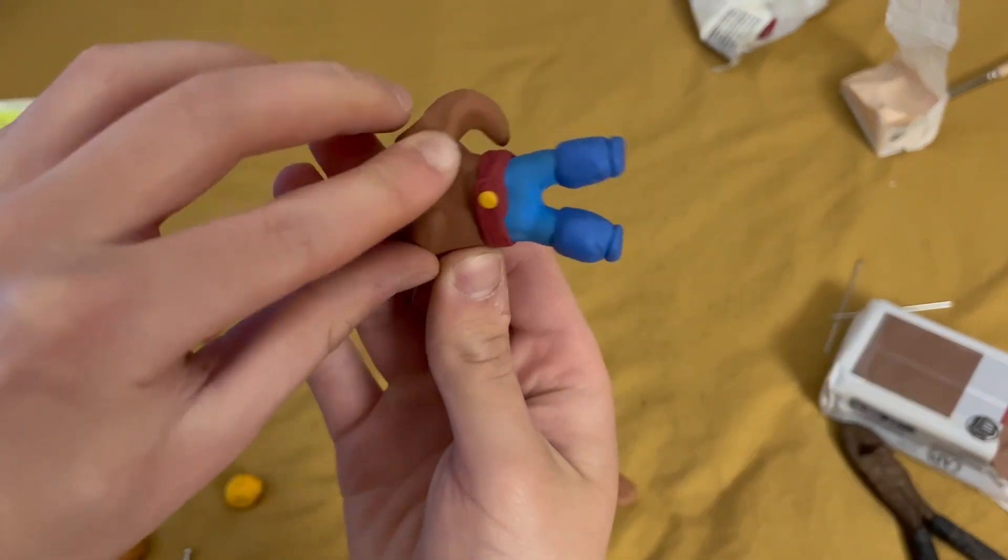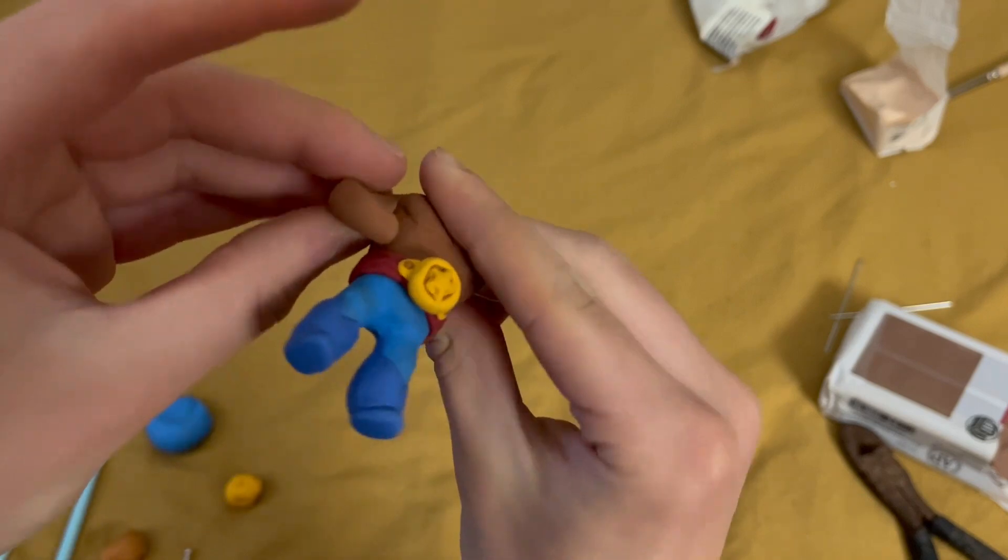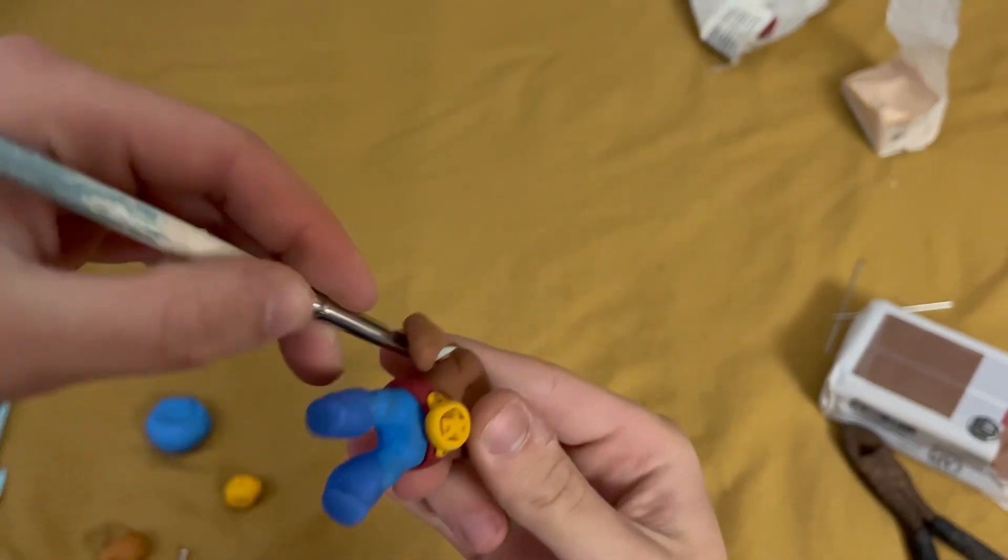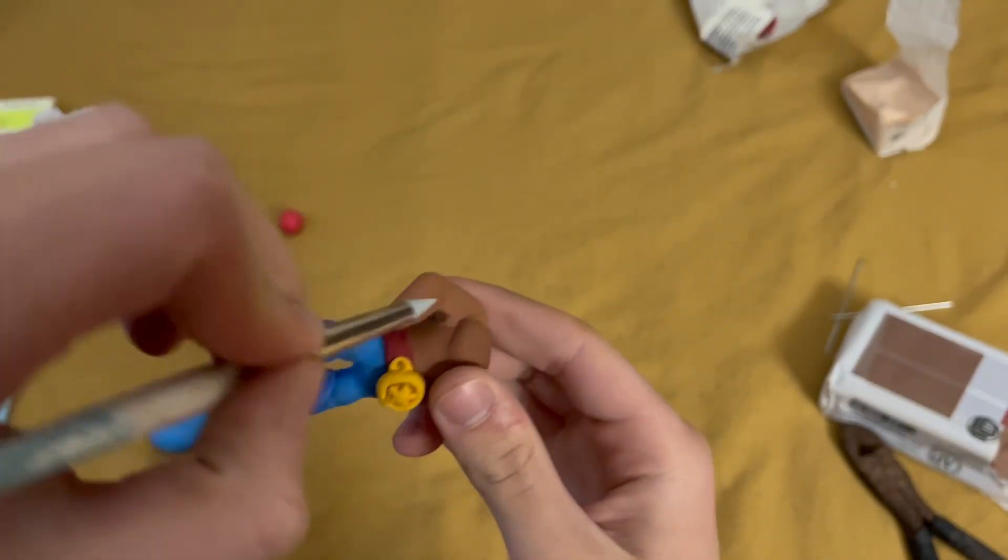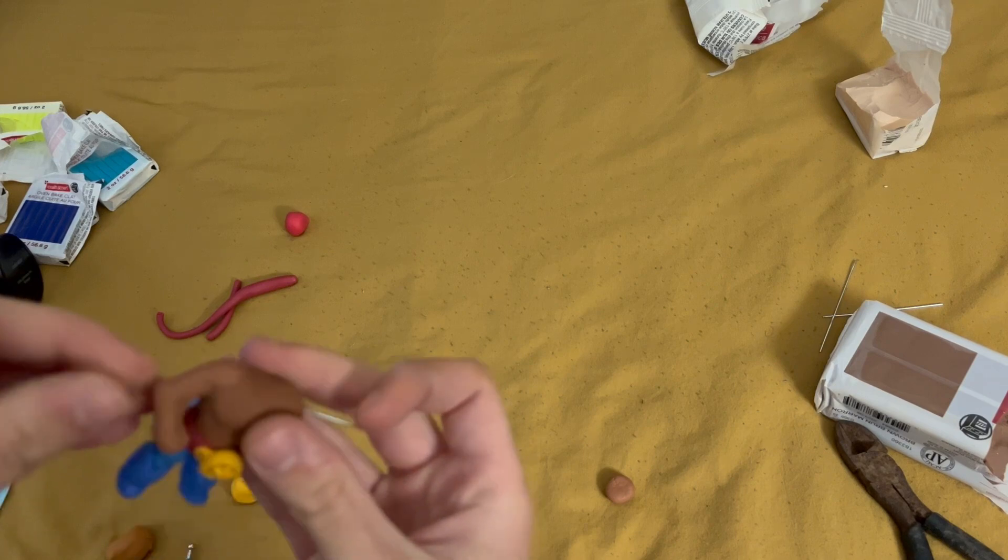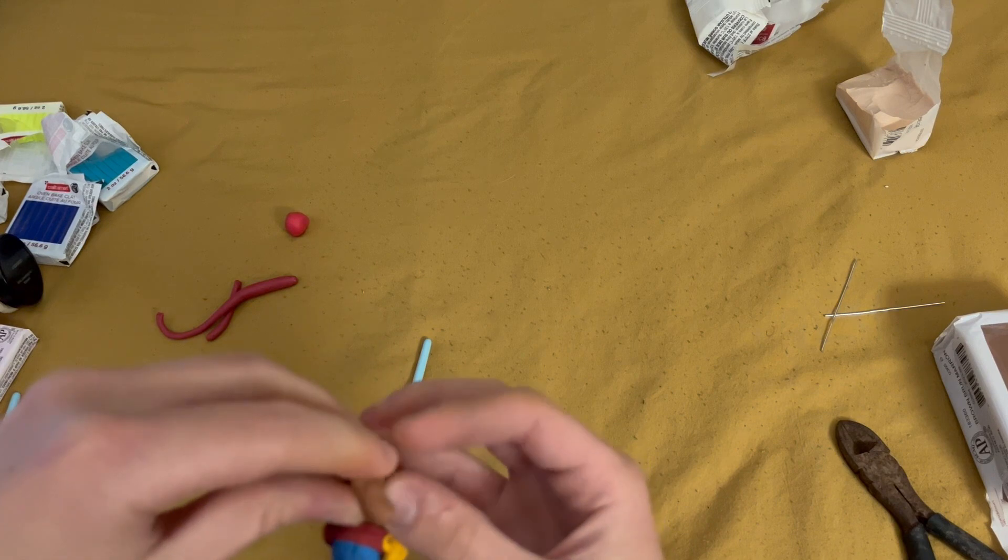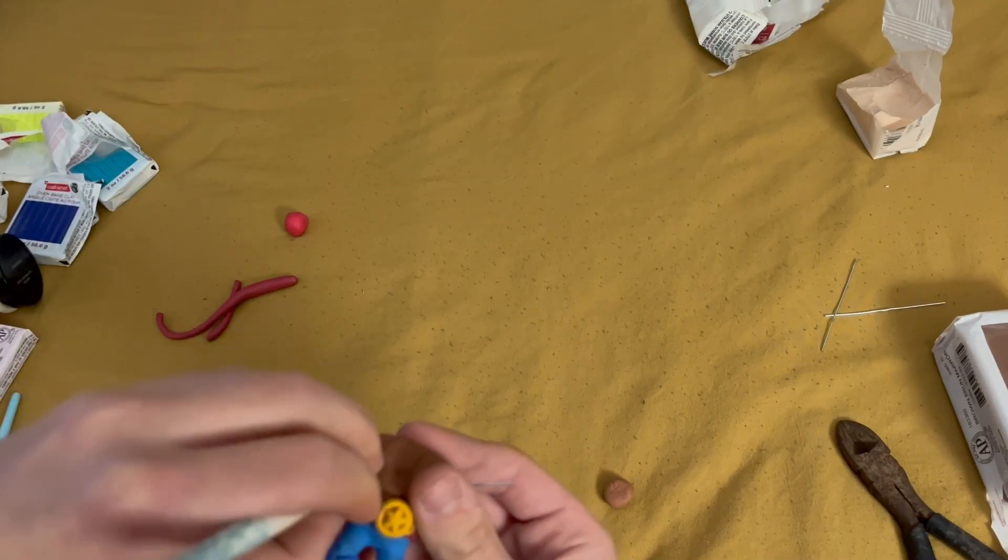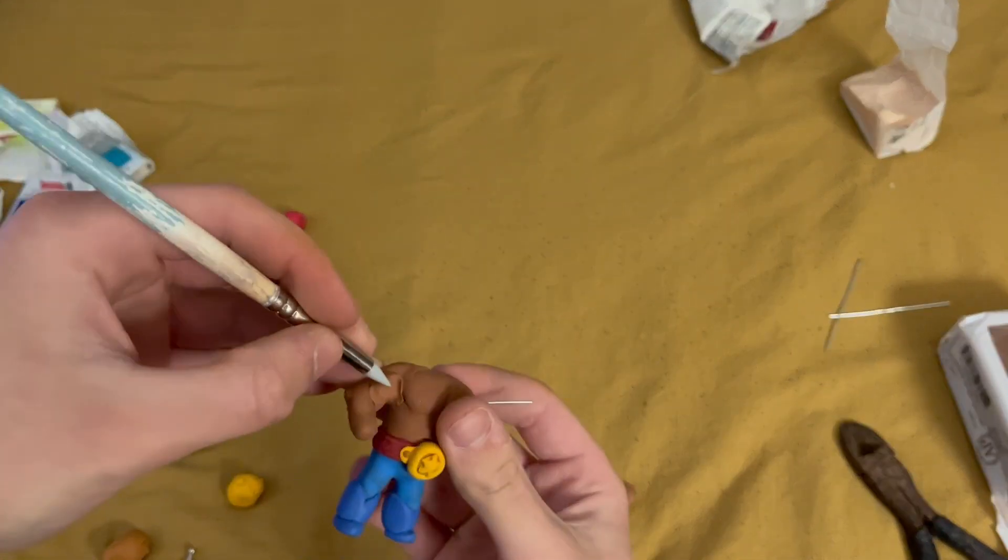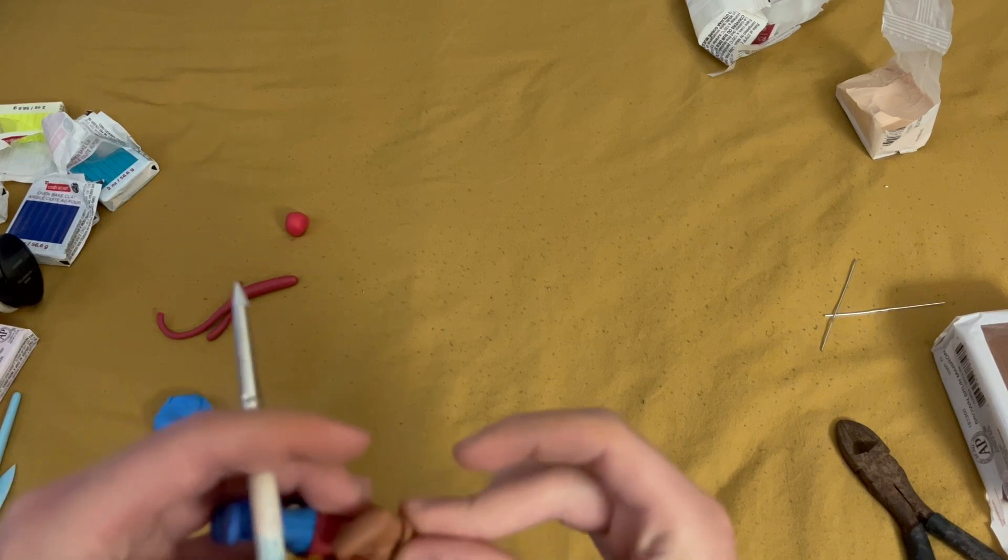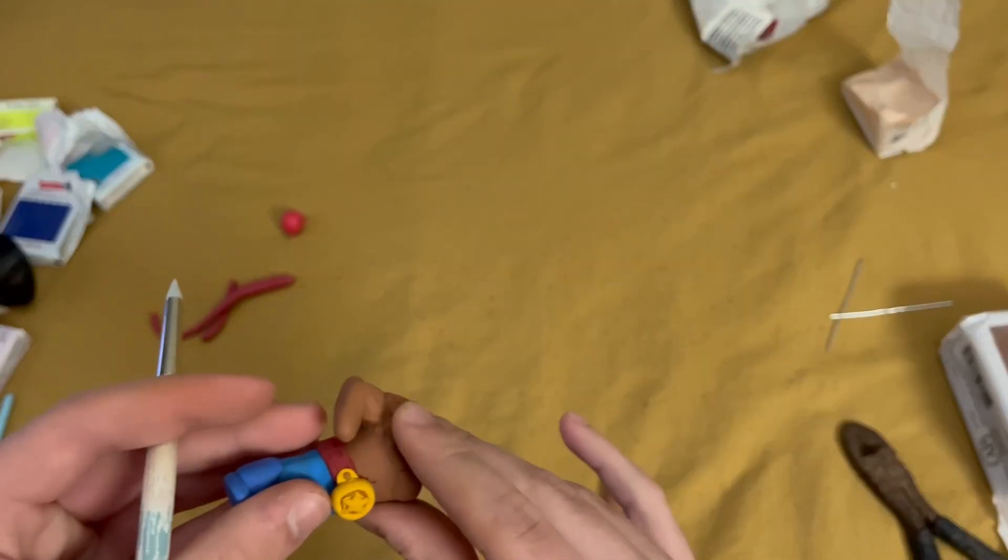The arms are simply just a worm of the skin color that gets blended into the rest of the body. Once it is blended into the rest of the body, I pinch out an elbow, and then I add in some extra clay for the bicep and the shoulder. Both of these get blended in once they are put on, and they are put in the proper place that they would be put.